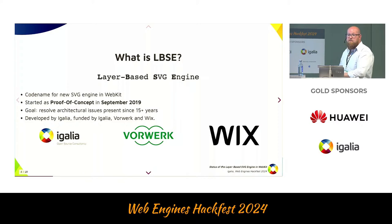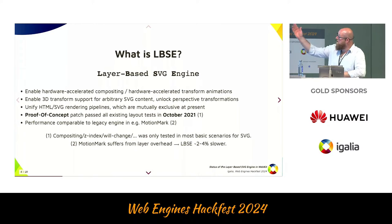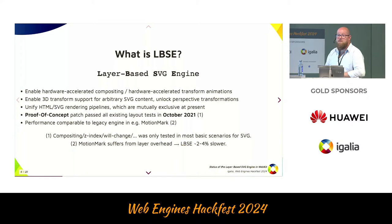That requires a real re-architecture of the whole design, and that is why it has never been done — it's a huge task and for the first years you don't get any reward. Ideally in the end everything still works and a few more extra cases work. But it needs to be done if we want hardware-accelerated compositing, hardware-accelerated transform and opacity animations, 3D transform support, perspective transformations — stuff that's been available for HTML and CSS for a decade, but not for SVG. That's a pity, and we need to fix it.